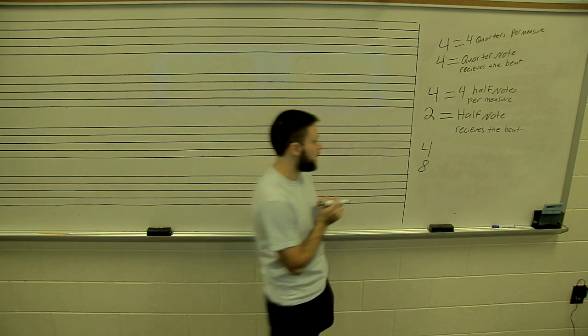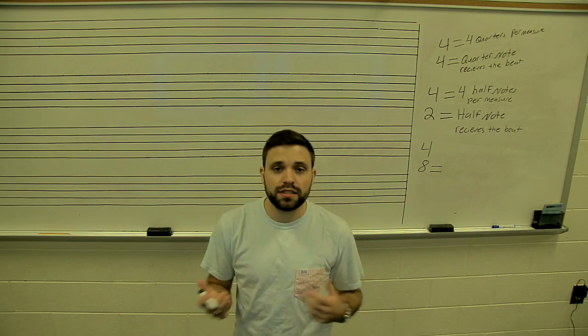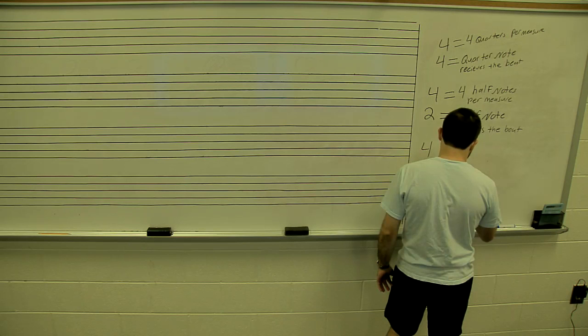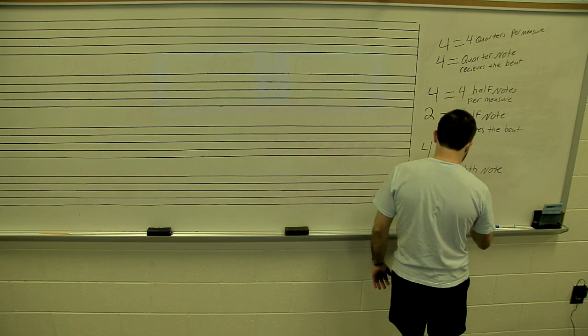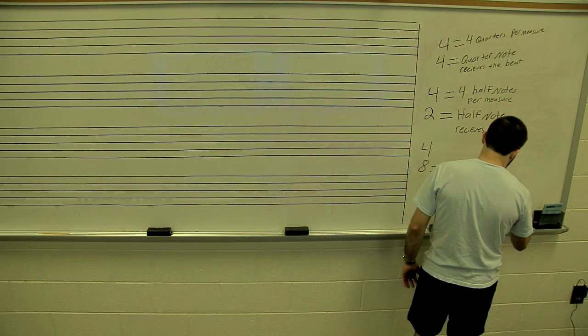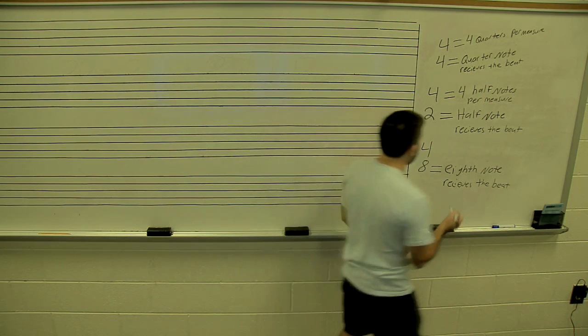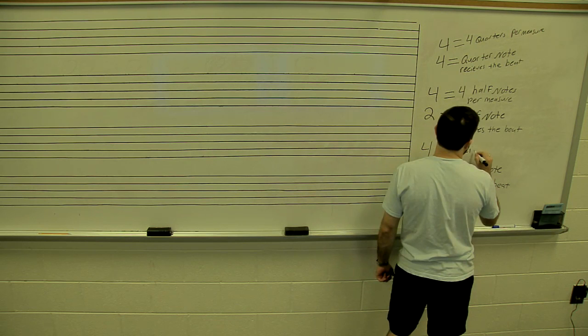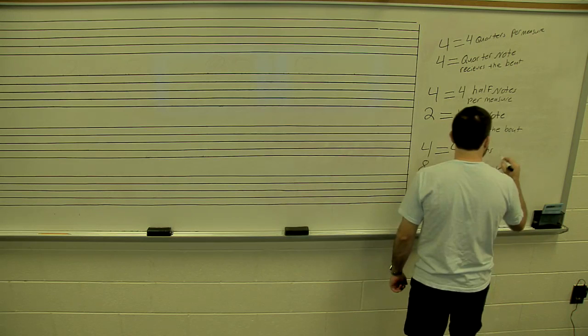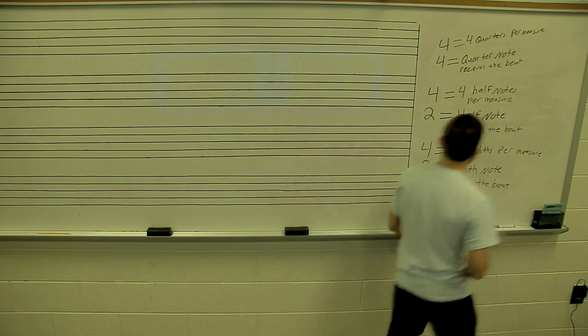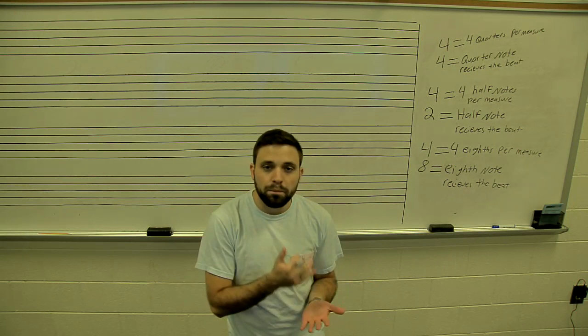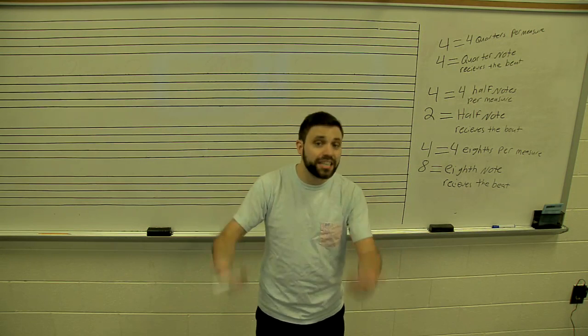In 4/8, the 8 at the bottom tells us that the eighth note receives the beat. So to summarize: the top number tells us how many beats per measure, and the bottom number tells us what note receives the beat — how we are organizing these rhythms into a measure.